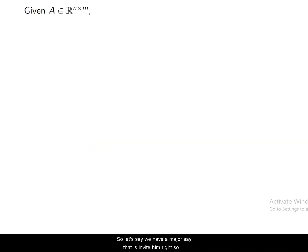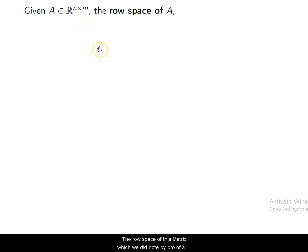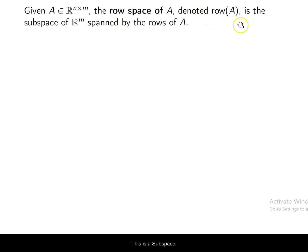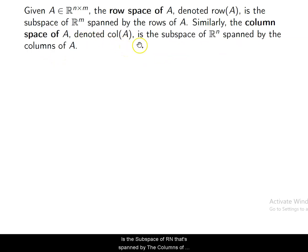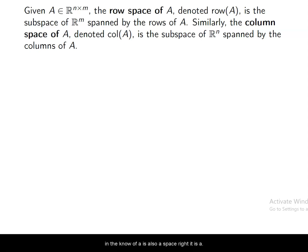Let's say we have a matrix A that is n by m — so n rows, m columns. The row space of this matrix, which we denote by row(A), is a subspace of R_m spanned by the rows of A. Similarly, the column space of A, which we call col(A), is the subspace of R_n spanned by the columns of A. So remember: row(A) is a space, col(A) is a space, and the null space of A is also a space — it is what's generated by a set of vectors.